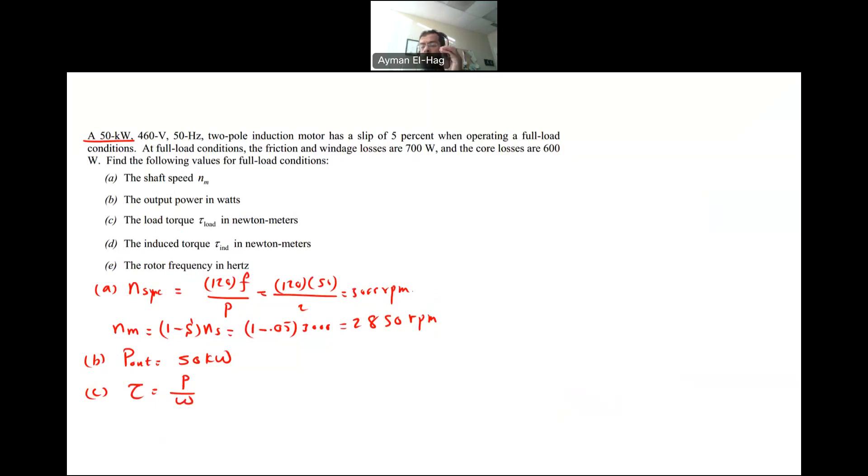We have to know which torque we are looking for to specify which power we should use. So here we want to find the load torque. Load torque, it means that the torque that is connected to the load, or basically it's related to the output power. So here your torque at the load is equal to the P out divided by the rotational speed of the rotor, which is omega M. So your torque at the load equal to P out, we already know it, which is the 50 kilowatt, 50 times 10 to the power 3 divided by omega M is basically NM, which is 2850, and multiply it with the conversion factor 2 pi over 60, and this will give me a total torque equal to 167.5 Newton meter.